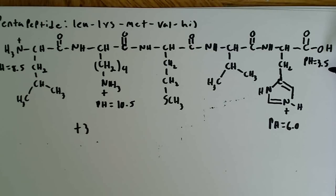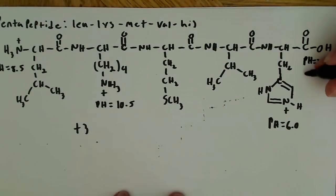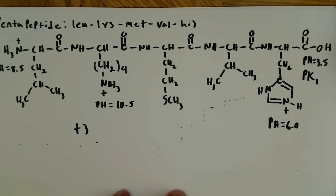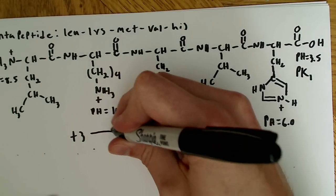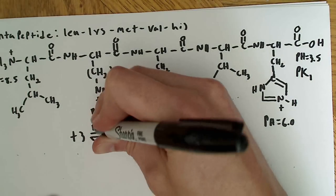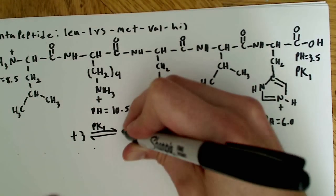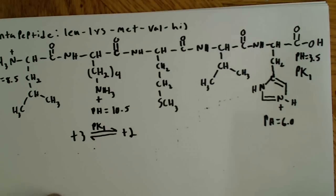So the first one to come off is going to be the carboxyl group, so we're going to call that pK1, and maybe this is what I haven't been doing is labeling this. So pK1, and then from here I say okay, pK1, and then that gives us a plus 2 overall charge on the molecule.